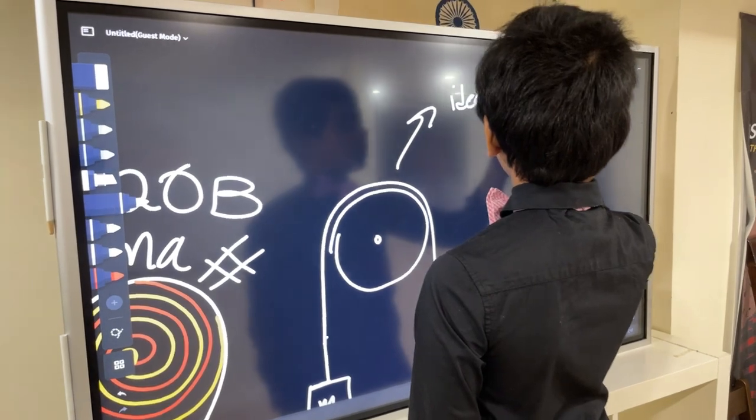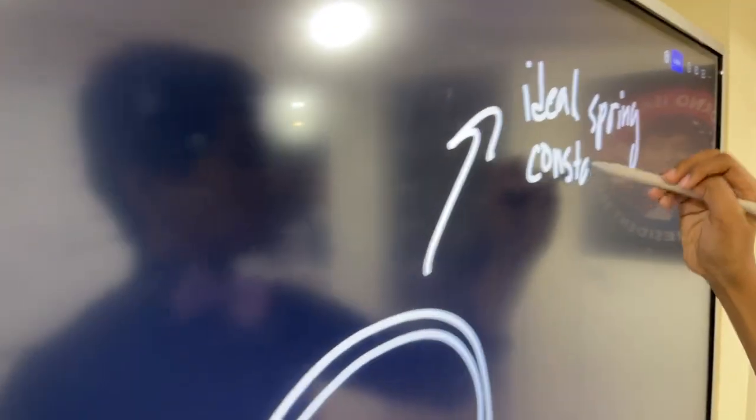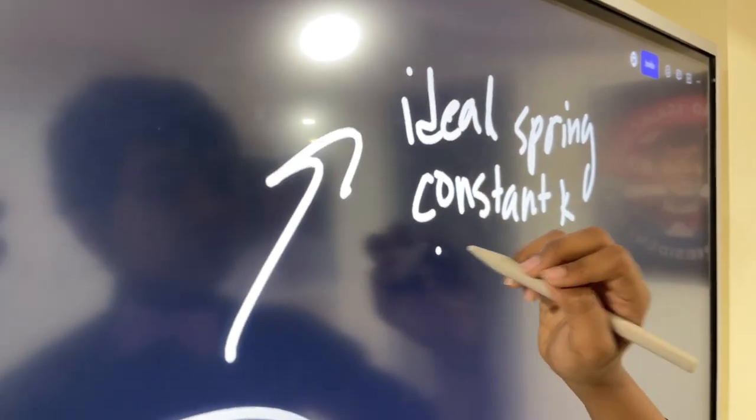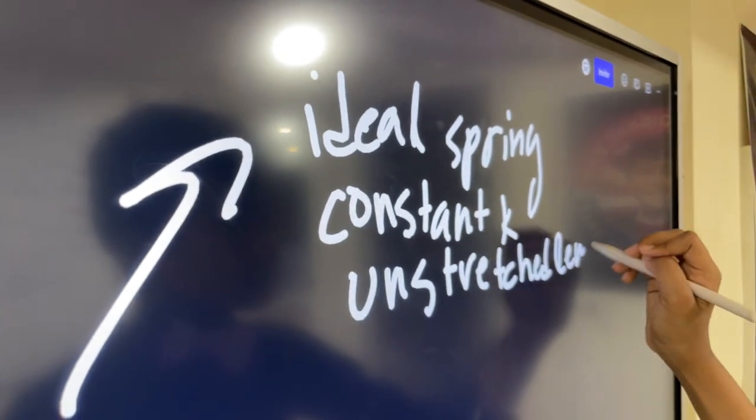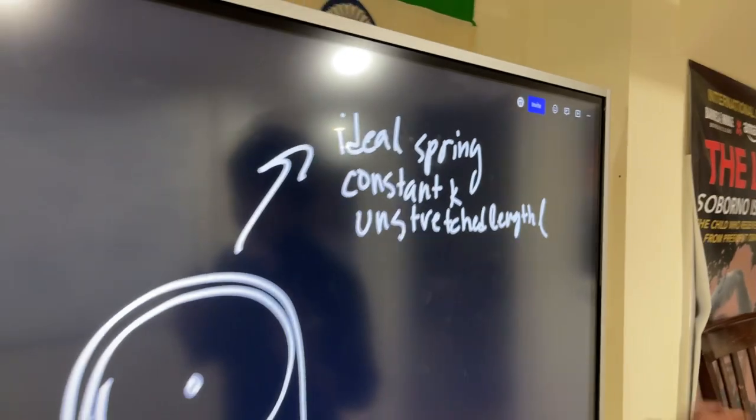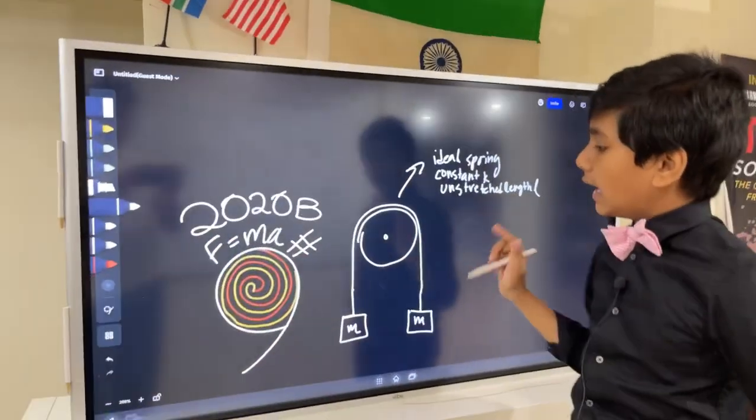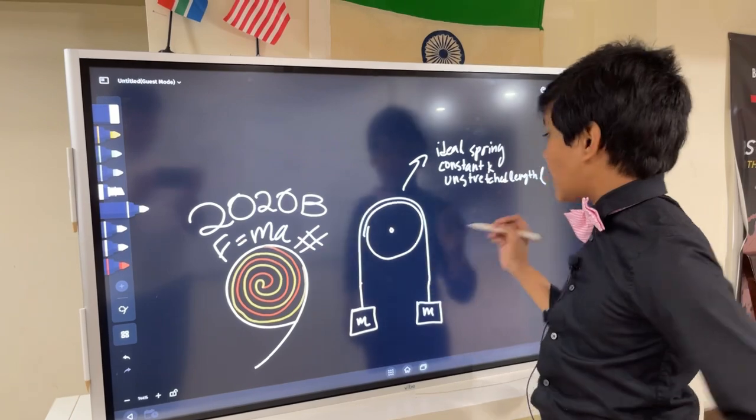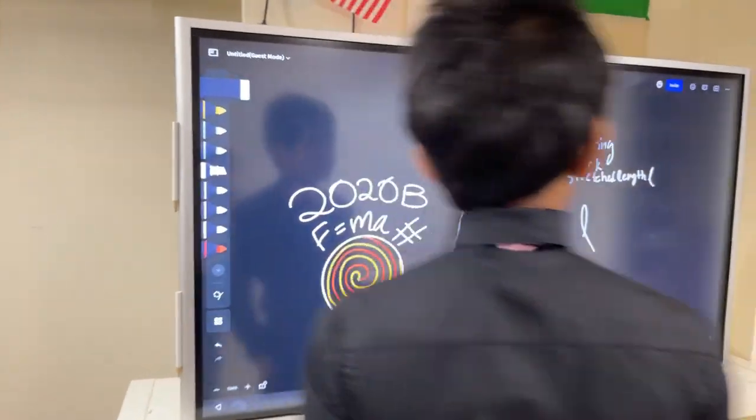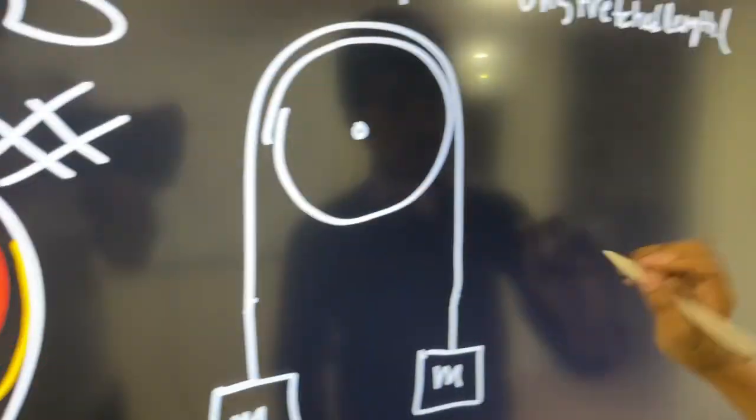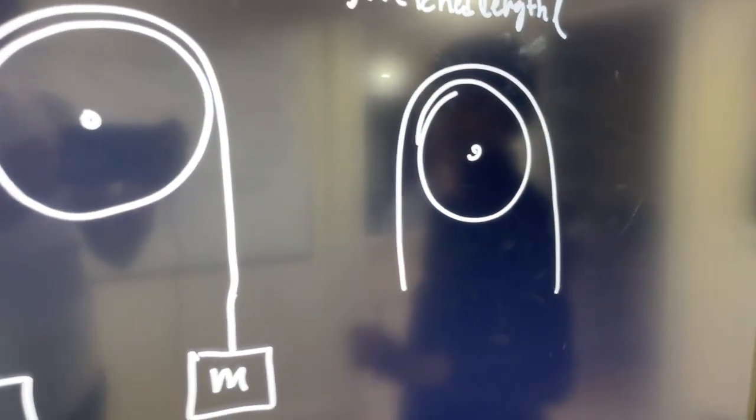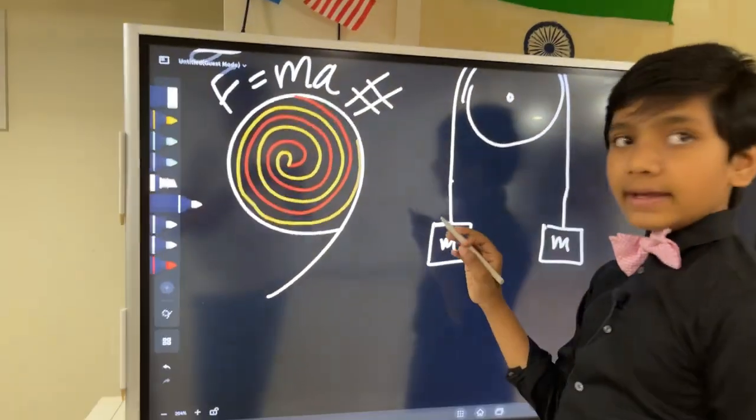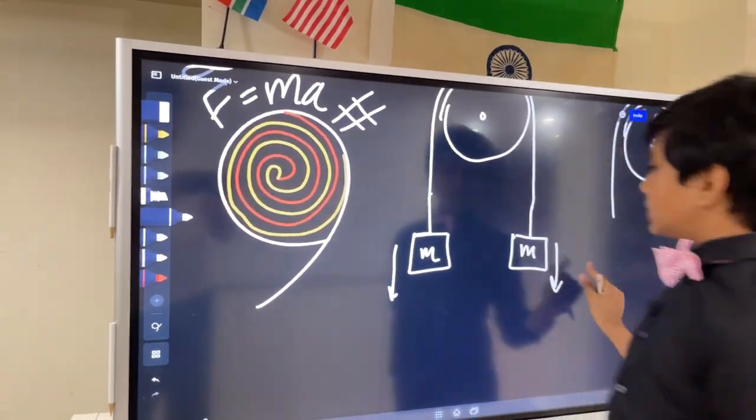With spring constant K and unstretched length L. So the question is what is the length of this guy at equilibrium? Now you might be inclined to say L, but oh no no no that's not going to work because L would be the correct answer if this was our situation. If this was our situation L would be the correct answer, but now that we've added masses in, this string is going to stretch.